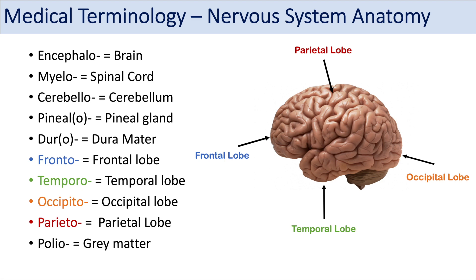Another prefix is polio, which we alluded to earlier. Polio means gray matter. You can think of the poliovirus and poliomyelitis. Conversely, white matter is indicated by the prefix leuko. You can think of leukodystrophy, a condition involving the white matter in the brain. Leuko actually means white, but in the context of the nervous system, leuko indicates white matter.